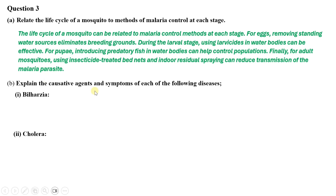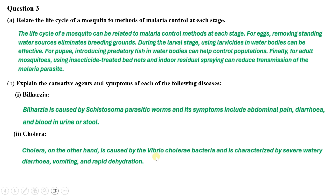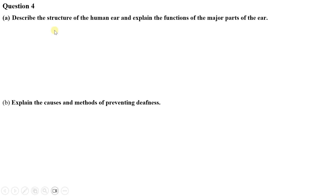Question three (b) — causative agents and symptoms of bilharzia and cholera: bilharzia is caused by Schistosoma, a parasitic worm, and its symptoms include abdominal pain, diarrhea, and blood in urine or stool. Cholera, on the other hand, is caused by Vibrio cholerae bacteria and is characterized by severe watery diarrhea, vomiting, and rapid dehydration.